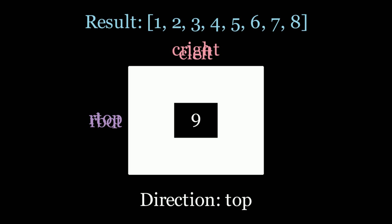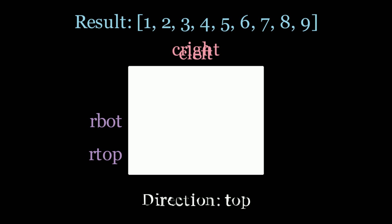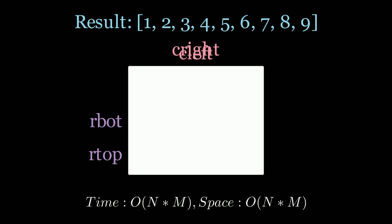We just scanned the entire perimeter by scanning top, then right, then bottom, then left, and by moving the R_top, R_bottom, C_left, and C_right pointers we effectively defined a new smaller perimeter. Now we scan the last element 9 and we're done — R_top is now passing R_bottom and we've completed the spiral traversal. The time complexity is O(nm) since we iterate through each element once, and the space complexity is also O(nm) because we store all elements in the result array.